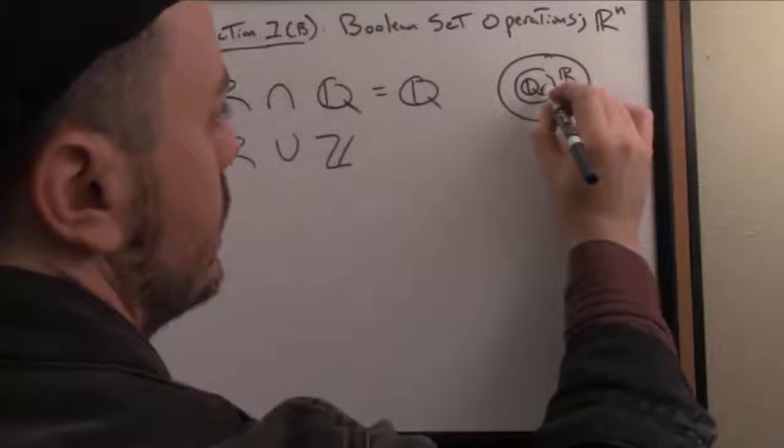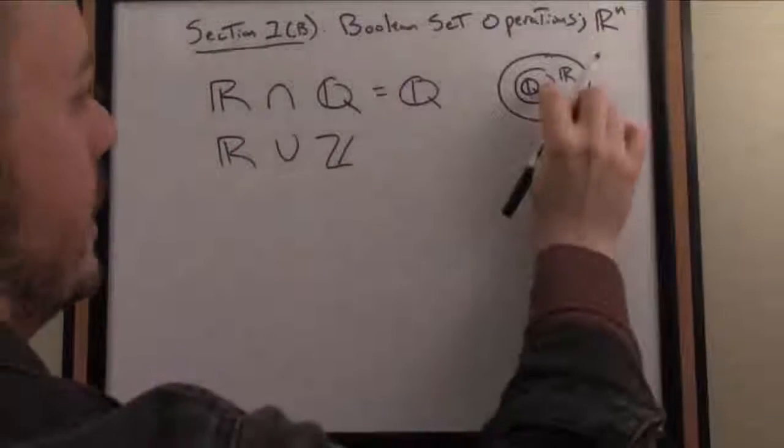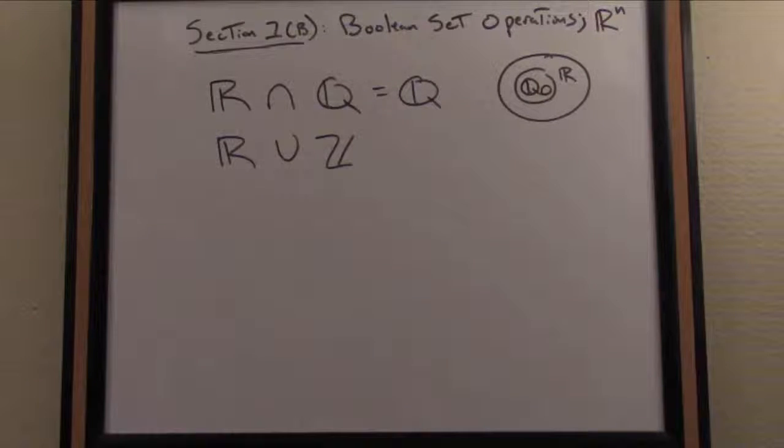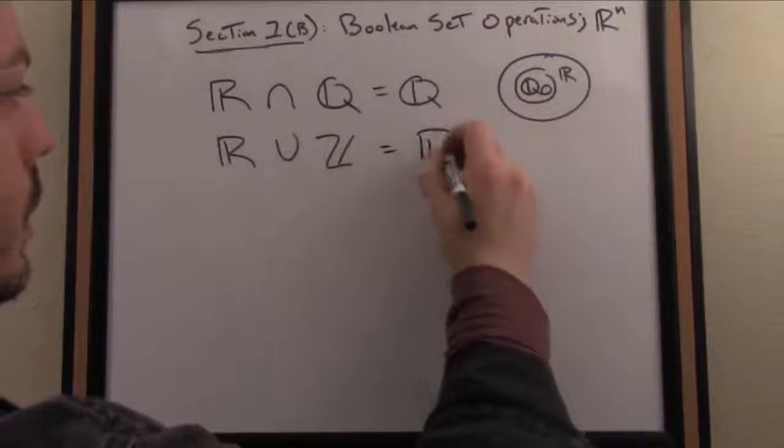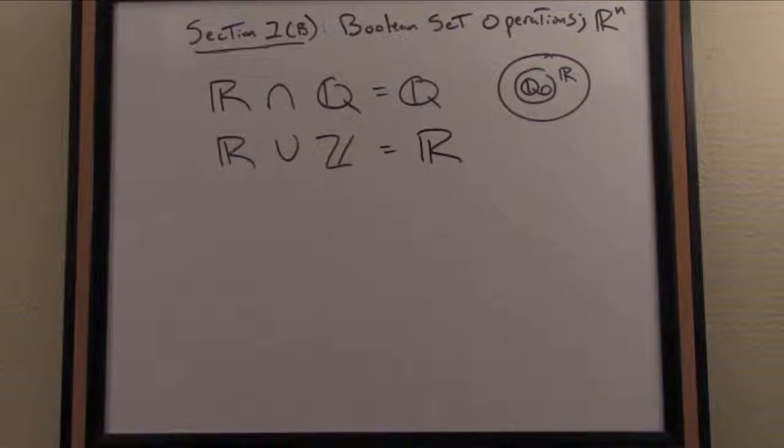The integers lie inside of the rationals, which lie inside of the reals. So if I take the union of the reals and the integers, I'm asking collectively, what's the set of all elements in either the reals or the integers? The answer is the reals, because the reals are a superset of the integers.